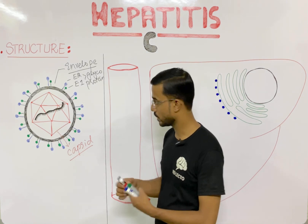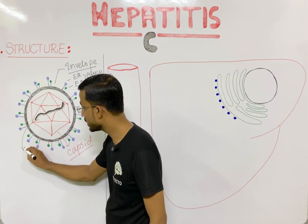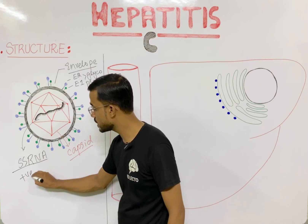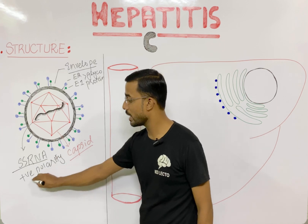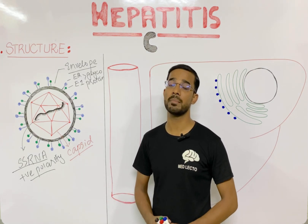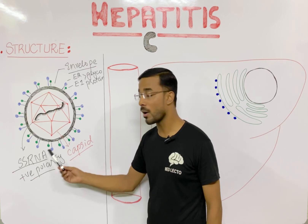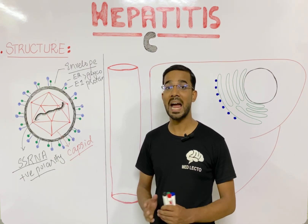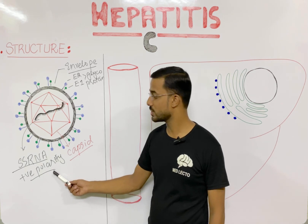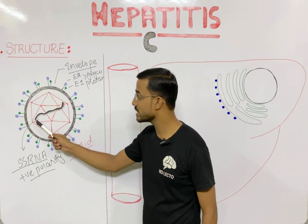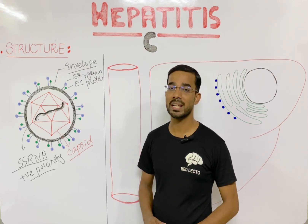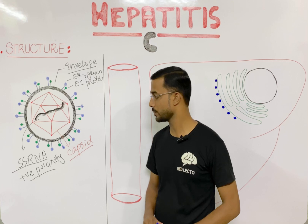Inside the capsid you will see the presence of a single-stranded RNA, and that RNA is of positive polarity. Positive polarity means that the nucleotide sequence is similar to messenger RNA — this positive polarity single-stranded RNA will act as a messenger RNA as well. There is no segmented form; you will see just one segment of the RNA. Hepatitis C virus is an RNA virus.